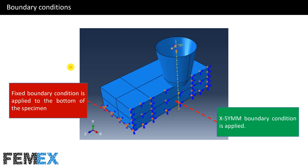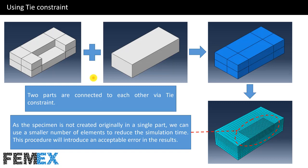Now I want to talk about the boundary conditions. In this model, the specimen has a plane of symmetry parallel to the ZY plane. I have used this plane of symmetry, defined half of the specimen, and applied a symmetric boundary condition to this face of the specimen. I have defined an X-symmetry boundary condition, and also the bottom of the specimen is fixed. In this model, I have defined the specimen in two parts — part 1 and part 2.